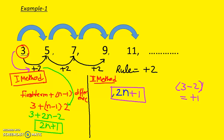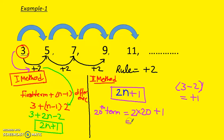You can pick either method. If in the exam they say find the 20th term, replace n with 20: 2 times 20 plus 1 equals 40 plus 1, which is 41. That's it.